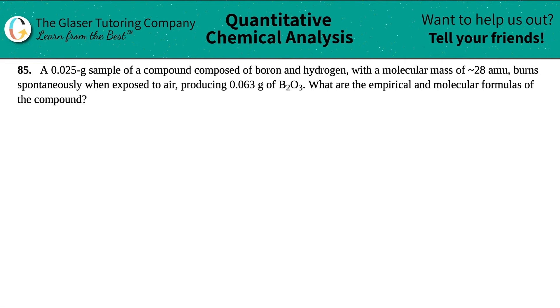Number 85. A 0.025 gram sample of a compound composed of boron and hydrogen, with a molecular mass of around 28 AMU, burns spontaneously when exposed to air, producing 0.063 grams of B2O3. What are the empirical and molecular formulas of the compound?